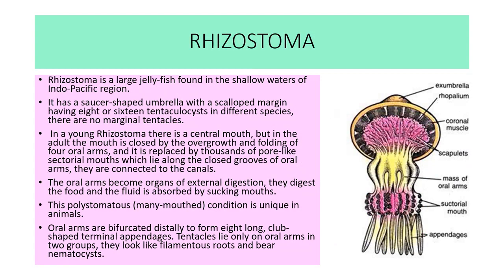Rhizostoma is a large jellyfish found in shallow waters of the Indo-Pacific region. It has a saucer-shaped umbrella with scalloped margins having 8 or 16 tentaculocysts depending on species. There are no marginal tentacles. In young Rhizostoma there is a central mouth, but in the adult the mouth is closed by overgrowth and folding of four oral arms. The oral arms become organs of external digestion, absorbing fluid through sucking mouths — a unique polystomous condition. The oral arms bifurcate distally to form 8 long club-shaped terminal appendages, with tentacles bearing nematocysts arranged in two groups resembling filamentous roots.